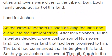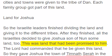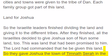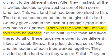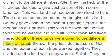Land for Joshua. So the Israelite leaders finished dividing the land and giving it to the different tribes. After they finished, all the Israelites decided to give Joshua son of Nun some land, too. This was land that had been promised to him. The Lord had commanded that he be given this land. So they gave Joshua the town of Timnath-Serah in the mountains of Ephraim. This was the town that Joshua told them he wanted. So he built up the town and lived there.